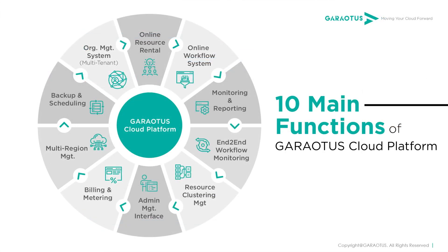The cloud platform has 10 main functions, separated into user-side, admin perspective, and others. From the user side, they can use workflow automation to acquire online resources, and they can track how much usage they have on the platform. From the admin perspective, they are able to monitor resources and determine the best time to scale up the cluster to ensure users always have sufficient resources. Admins can also track user resource consumption through metering and provide billing to internal or external users.